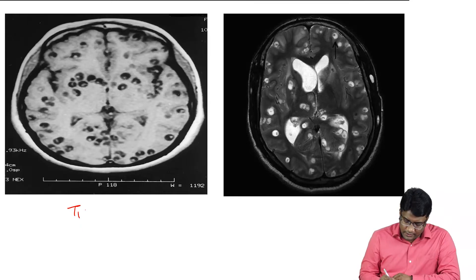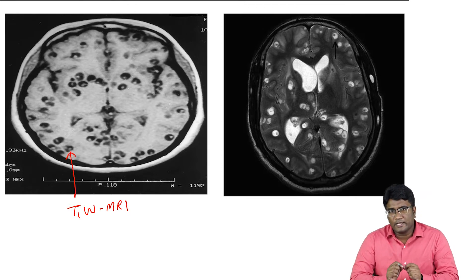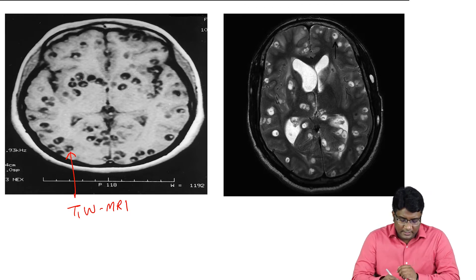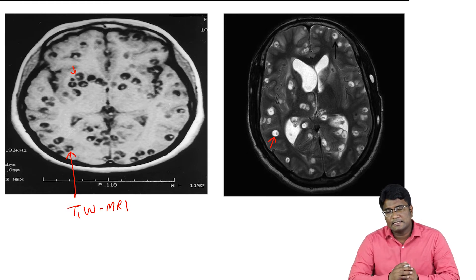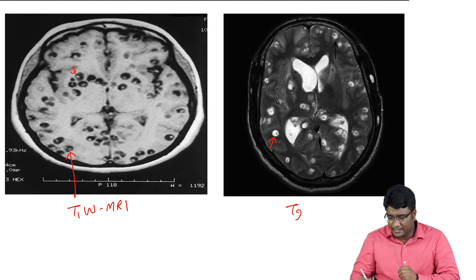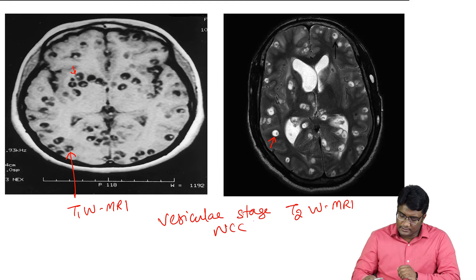This is a T1-weighted MRI showing cystic lesions with a central scolex. On T2-weighted MRI, the cystic lesions appear white, while on T1 they appear dark. The cystic areas show a hypointense scolex on T2-weighted MRI. This is how you see the vesicular stage of neurocysticercosis — a cyst with a central scolex.